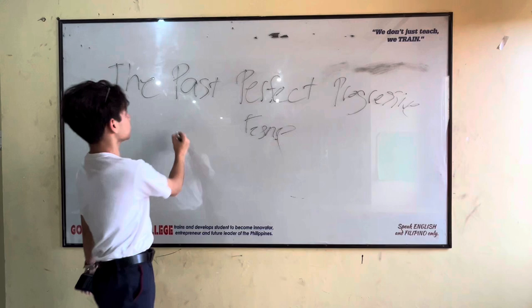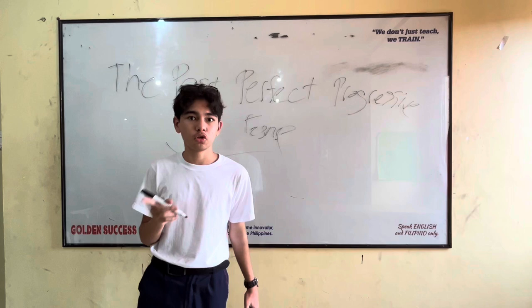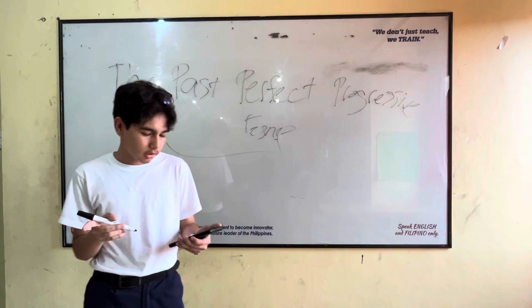It is also known as the past perfect continuous tense. It is used to describe an ongoing action that was happening before another action. It is formed by using the subject followed by 'had been,' followed by the present participle form of the verb.